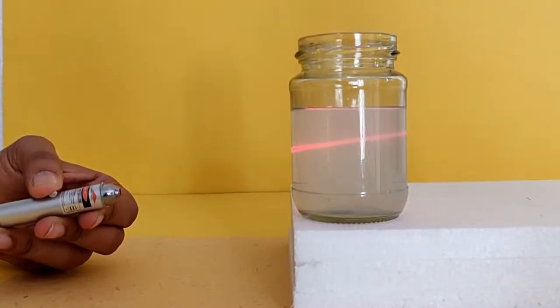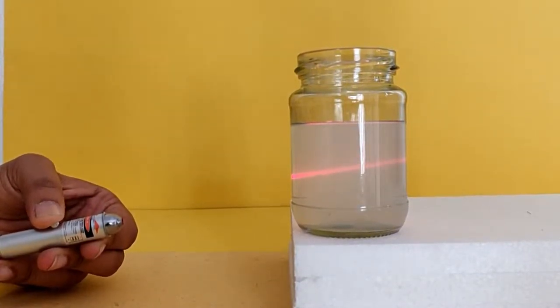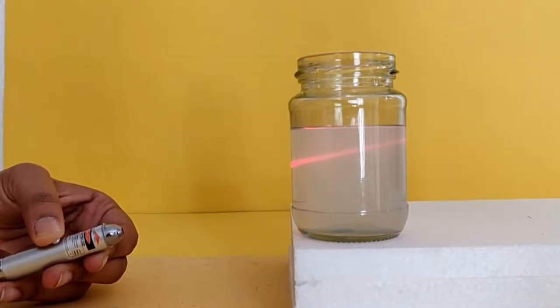Point a laser beam at the jar so that it passes through it, and now you will be able to observe the path of light in the water.